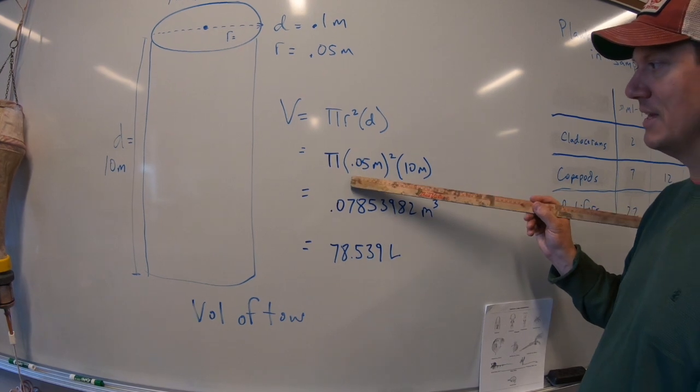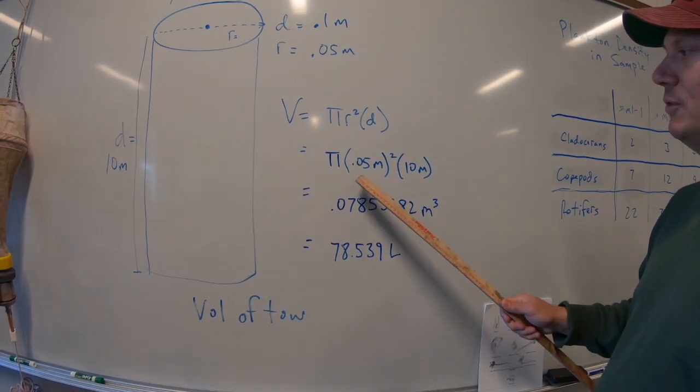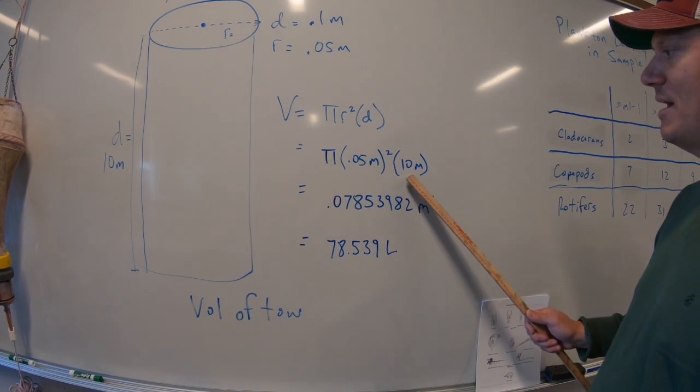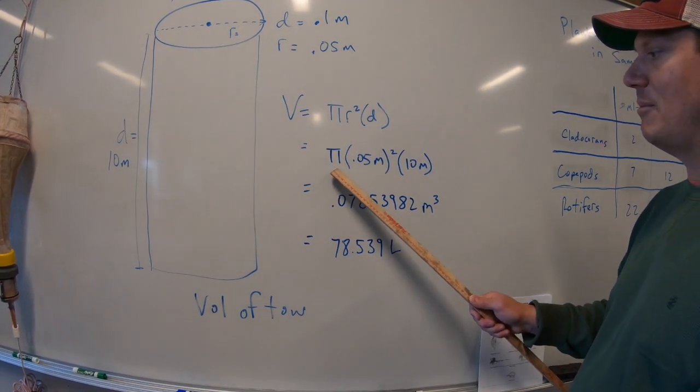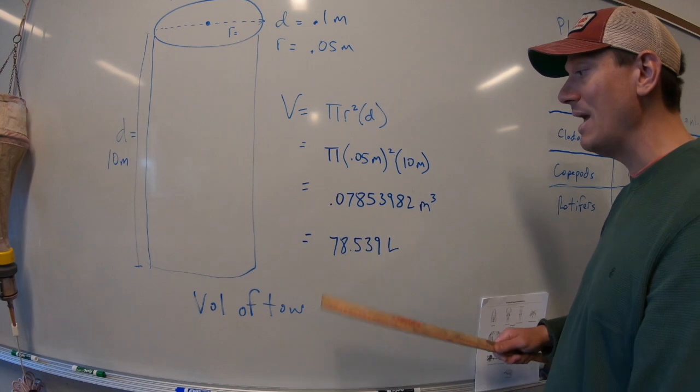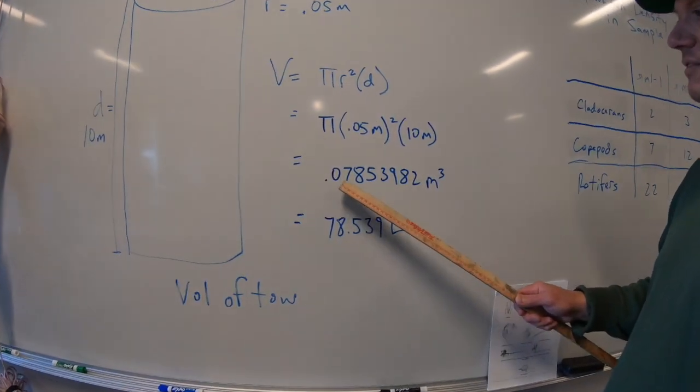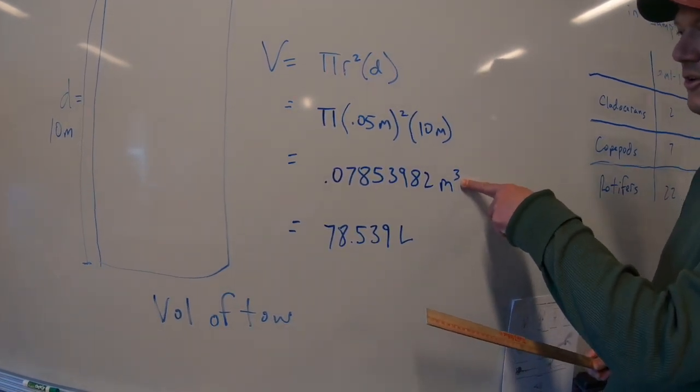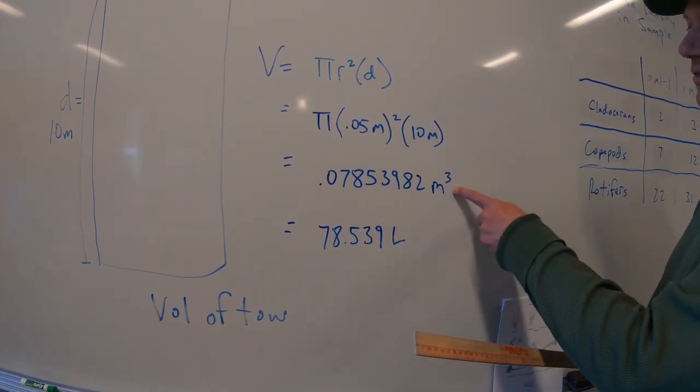Order of operations is really important here, right? We want to do first inside the parentheses. So square this, then multiply it by the distance of the tow, and then multiply it by pi. Really important to not round any numbers yet. So this, 0.07853, all that number there, meters cubed. Meters times meters times meters is meters cubed. This is the volume.